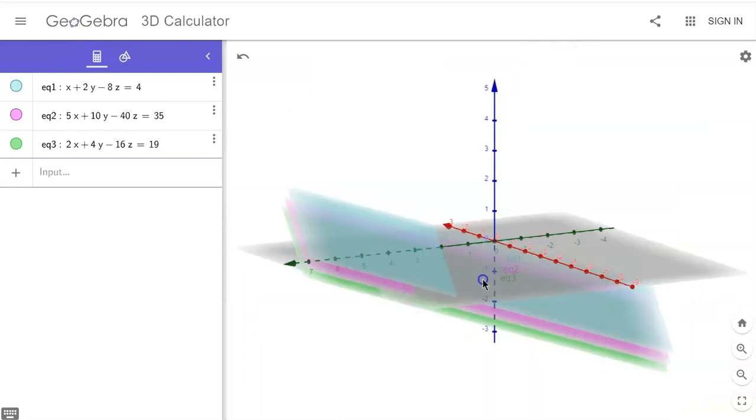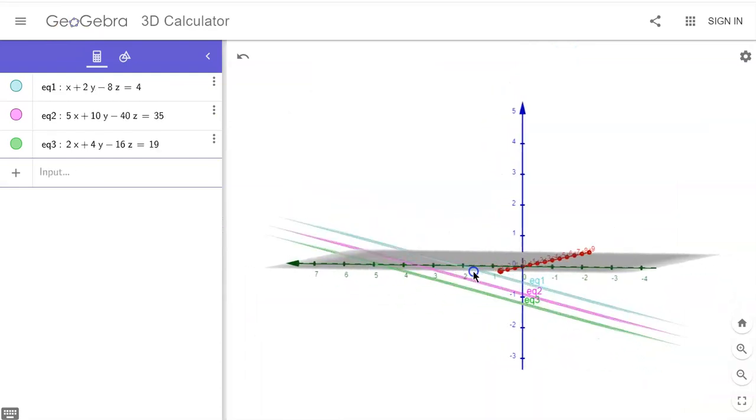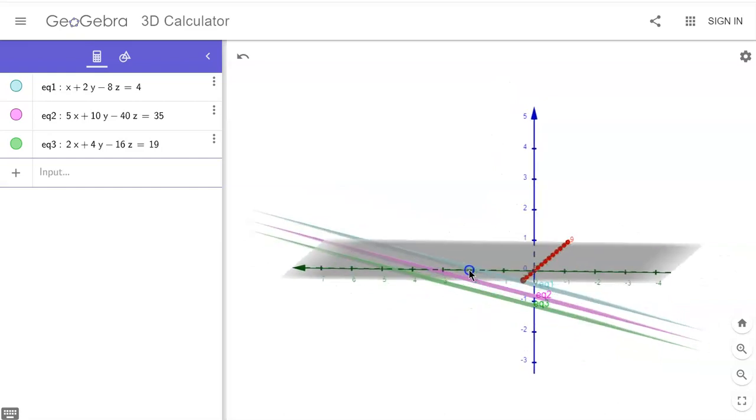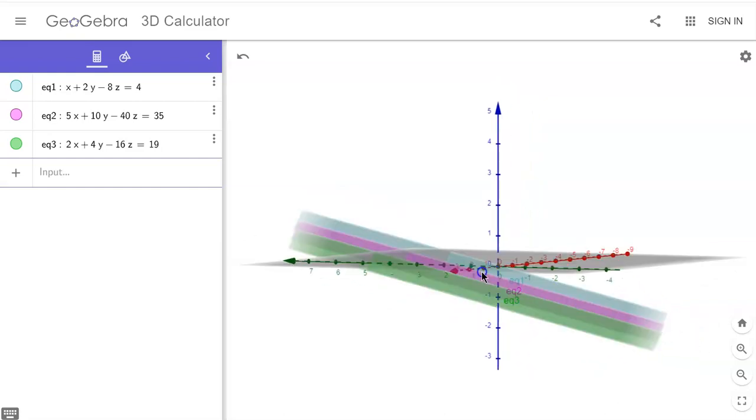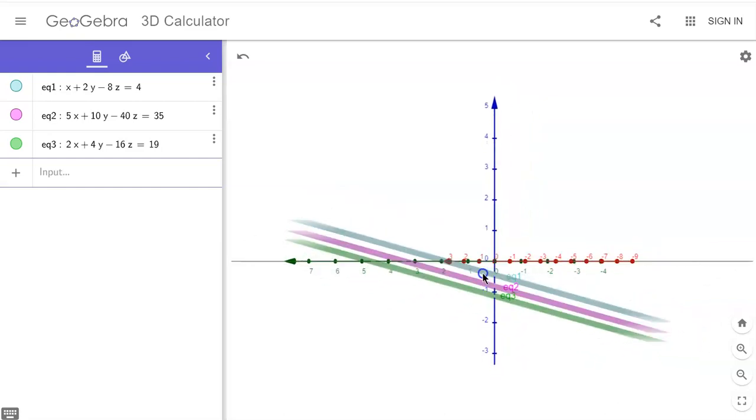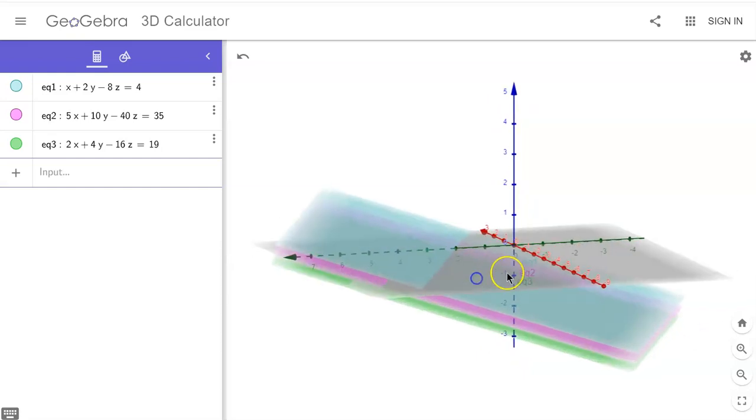So here's an example of three parallel planes, which you can see as I move through those. They will never, ever touch. You won't get any solutions to this system of equations. So these are called inconsistent.